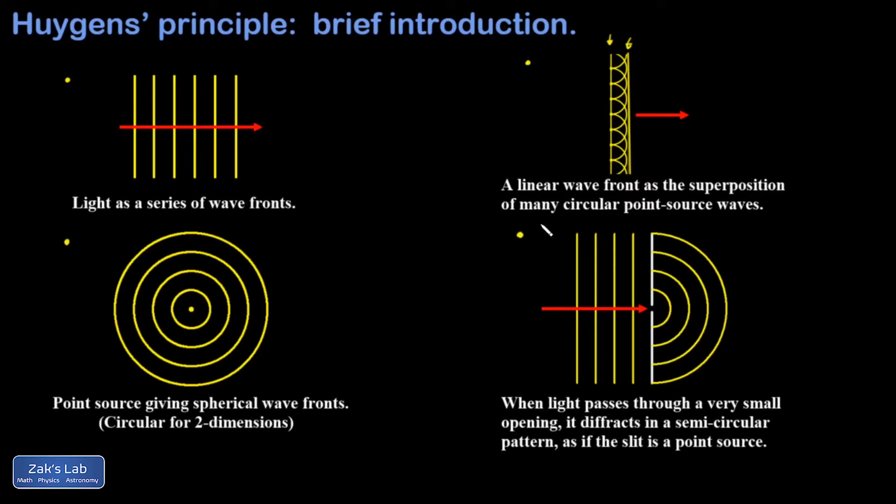So in the picture on the bottom right, we see what happens if the light wave passes through a small slit. And now that we have Huygens' Principle, we can understand this phenomenon.